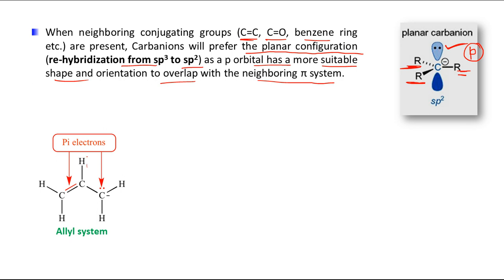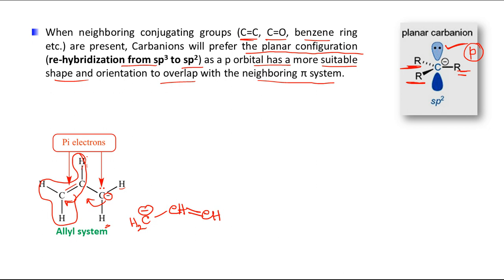For example, in the allyl carbanion system, two R groups are H but one R group contains a C=C double bond. The lone pair takes part in conjugation, and the resulting resonance structure shifts the negative charge to the terminal carbon — H₂C=CH-CH₂⁻ gives a resonance structure with negative charge at the other end.